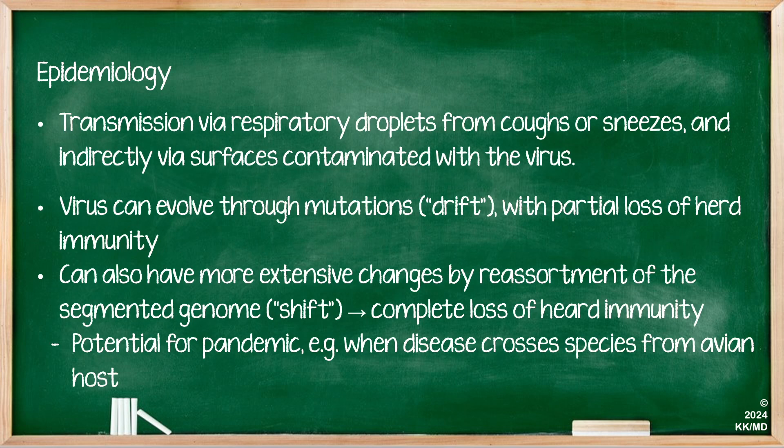The influenza virus is transmitted via respiratory droplets from coughs or sneezes, as well as indirectly via surfaces contaminated with the virus. The virus can evolve through mutations known as drift — these are small mutations with partial loss of herd immunity. More extensive changes occur by reassortment of the segmented genome, known as shift, which leads to complete loss of herd immunity and has the potential to cause pandemics, for example when the disease crosses species from an avian host.